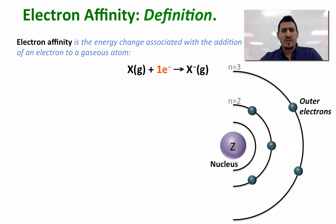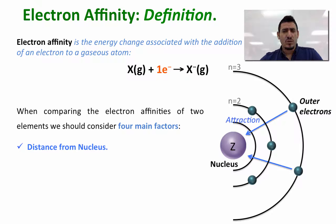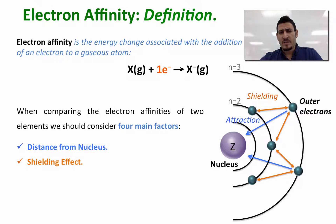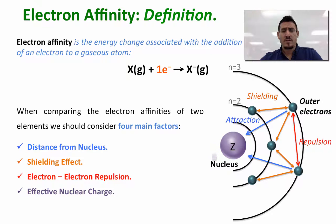When comparing electron affinities of two elements, we should consider four main factors. The first is the distance from the nucleus — to which energy level we are adding the electron. The second is the shielding effect — how much repulsion we get from the inner electrons. The third is electron-electron repulsion — whether we are adding the electron to an empty or half-occupied orbital. The last one is the effective nuclear charge, which is the number of protons in the nucleus.